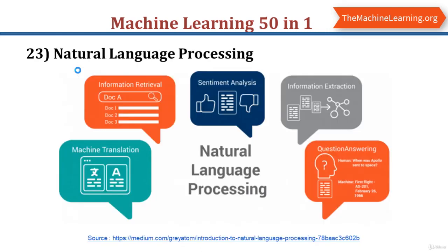The next topic is natural language processing. NLP is a field in machine learning with the ability of a computer to understand, analyze, manipulate, and potentially generate human language. NLP is used in many places — Gmail uses it to check whether an email is spam, Google Translate uses it to translate one language to another, and YouTube also uses NLP to check whether a comment is spam.